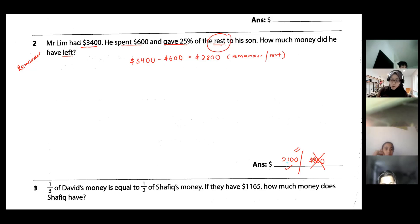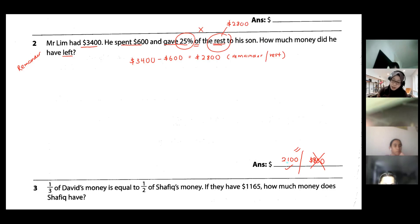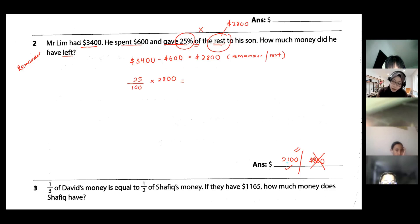Of this money, he gave twenty-five percent to the son. 'Off' means multiply: twenty-five percent times the rest, which is two thousand eight hundred. So we calculate twenty-five over one hundred times two thousand eight hundred. You can use your calculator — just press it and you'll get seven hundred dollars. This is what he gave to the son.